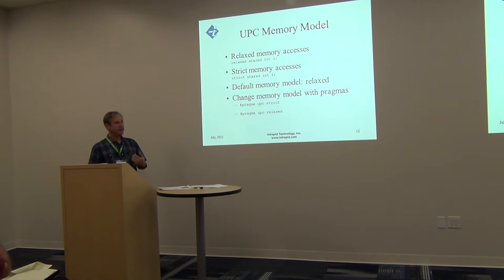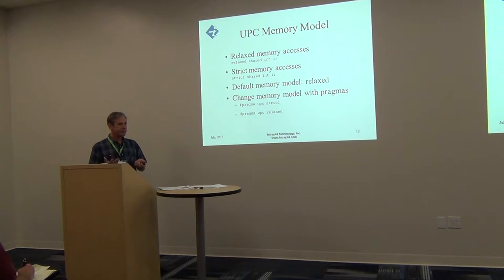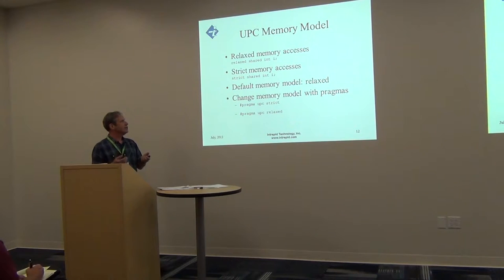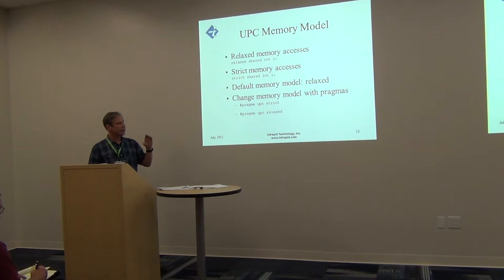UPC adds two additional qualifiers: 'relaxed' and 'strict.' A way to think about it is that strict is something like volatile applied to shared accesses, while relaxed is the default. From the programmer's point of view, if they don't specify either, it defaults to relaxed. Programmers can also declare certain regions to have a different default using the two corresponding pragmas, which must appear at the beginning of an enclosing scope.